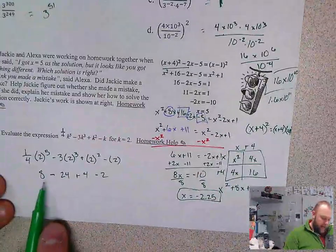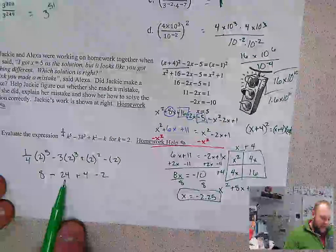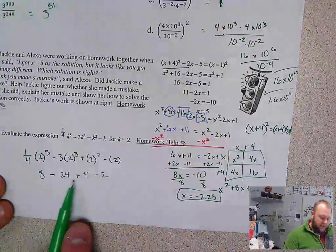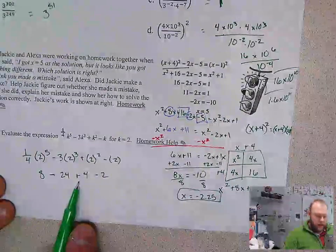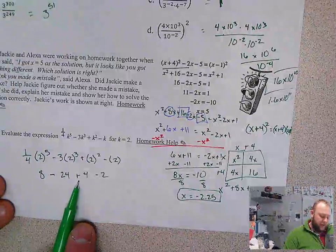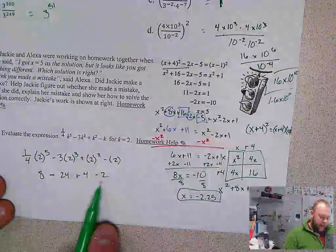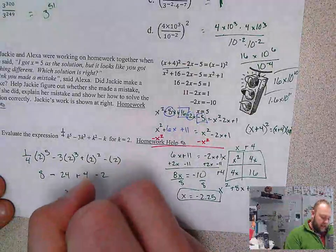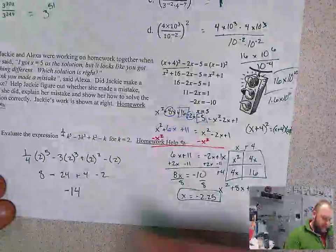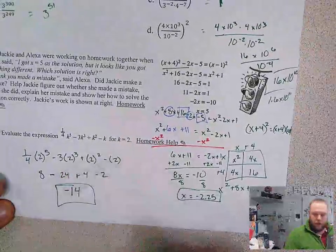Now working from left to right. 8 minus 24 is negative 16. Negative 16 plus 4 is negative 12. Negative 12 minus 2 is negative 14. And we have our answer.